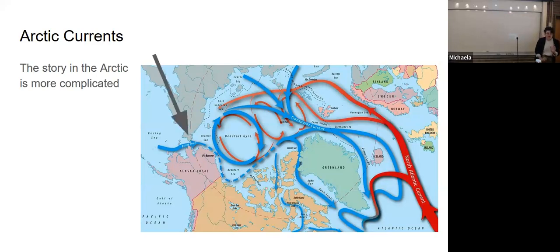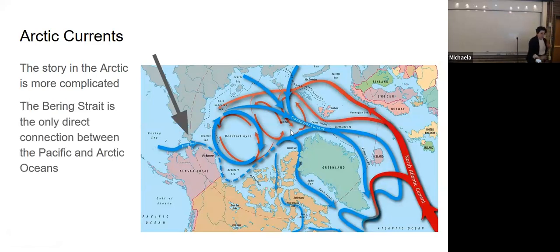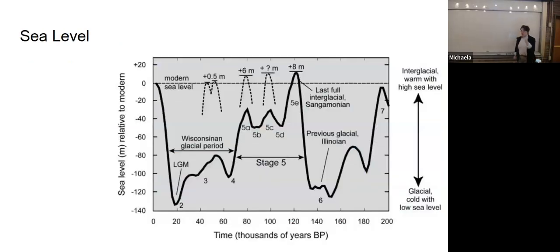This is the North Atlantic here coming into the Arctic. Swirls around. We have gyres. We have the exchange of heat. We have the exchange of fresh and salty water. This is a pretty complicated story. What I want you to look at specifically in this figure is that tiny blue arrow coming in from the Pacific Ocean into the Arctic. That's the Bering Strait. The Bering Strait is the only direct connection from the Pacific Ocean to the Arctic. This is a plot of sea level through time.